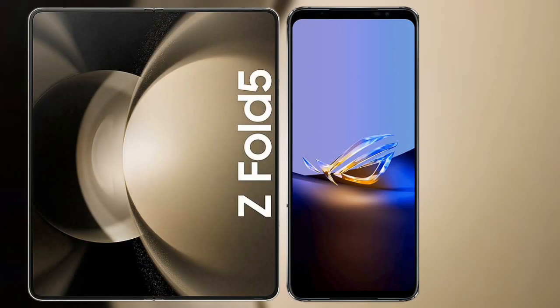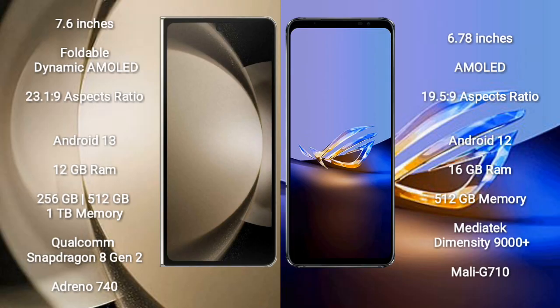I will compare the new Samsung Galaxy Z Fold 5 with the Asus ROG Phone 6D Ultimate. The Samsung Galaxy Z Fold 5 comes with a 7.6-inch foldable dynamic AMOLED display and an aspect ratio of 23.1:9. The Asus ROG Phone 6D Ultimate has a 6.78-inch AMOLED display with an aspect ratio of 19.5:9.